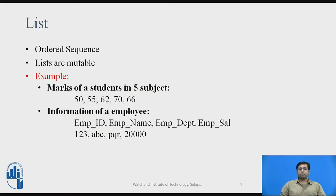List is an ordered sequence of zero or more reference objects. The Lists are mutable, i.e., the elements of the list can be added, updated, and deleted. For example, the marks of students of five subjects, and the information of the employee. The information of the employee contains employee ID, employee name, employee department, and employee salary. List can contain elements of variable types. It can contain a string, it can contain a number, or a float, or a boolean value in a single list.